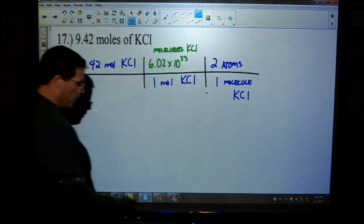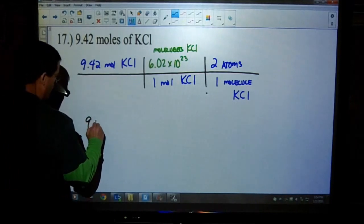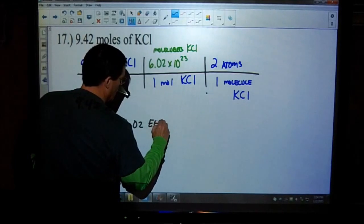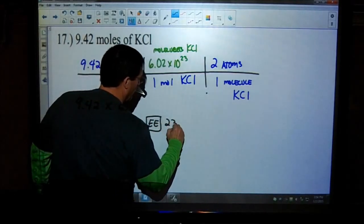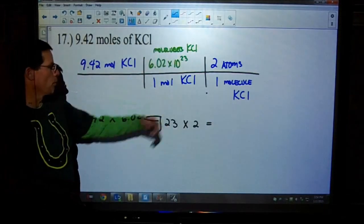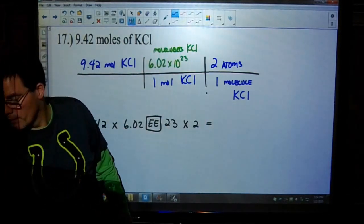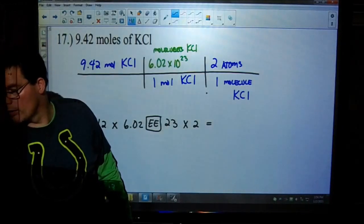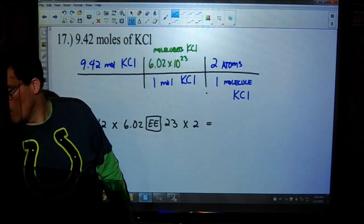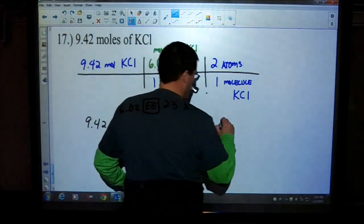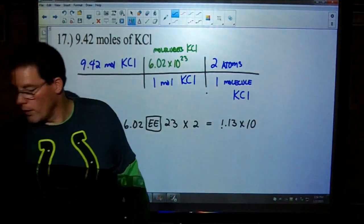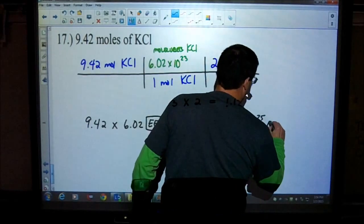Move your unit diagonally. We're always making sure that we put the larger value with the unit 1. A molecule is bigger than an atom. In one molecule of KCl, how many atoms are there? There's one atom of potassium and one atom of chlorine. So there are two atoms in one molecule of KCl. To calculate this out, 9.42 times 6.02 EE 23 times 2. In this case, we have 1.13 times 10 to the 25 atoms.